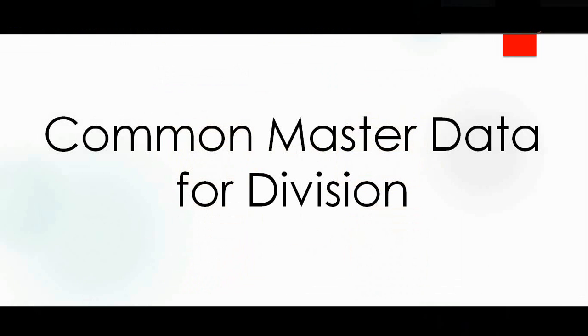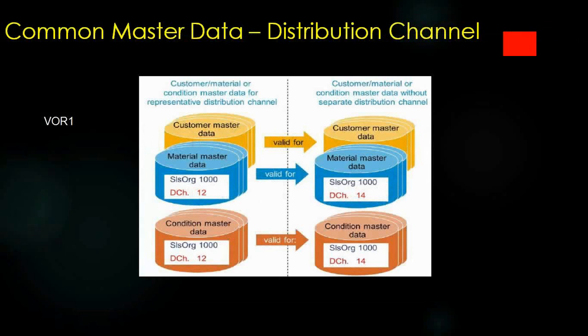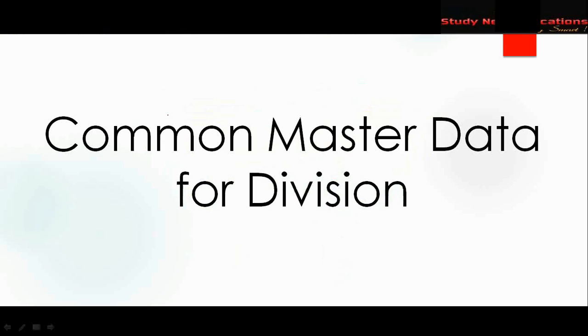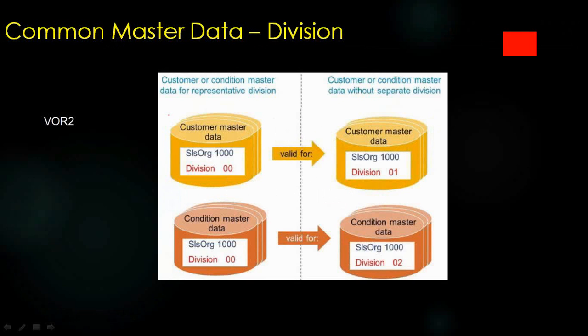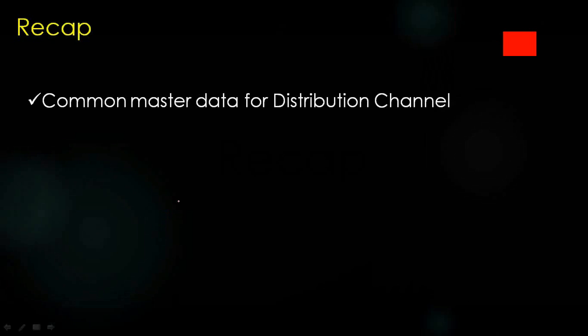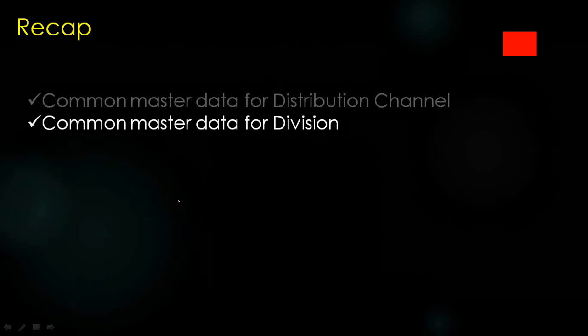To recap: for distribution channel, you can maintain a reference for pricing (condition), material master record, and customer master. For division, you can only maintain a reference for customer master and condition — not for material master. That covers the common master data for both distribution channel and division.